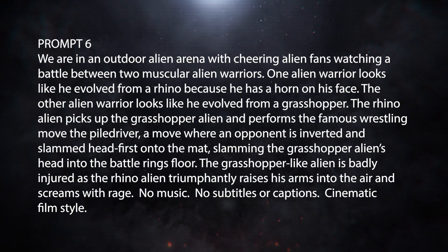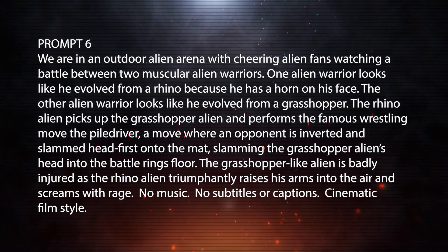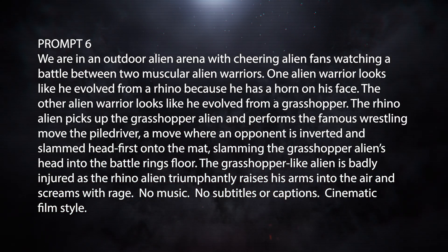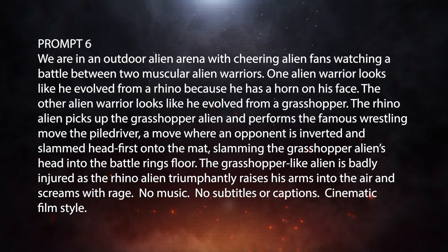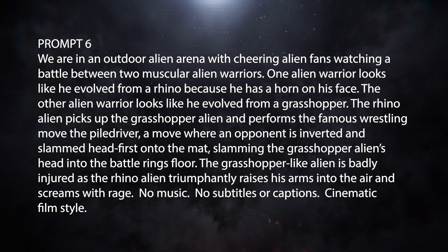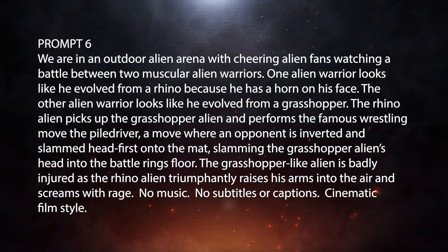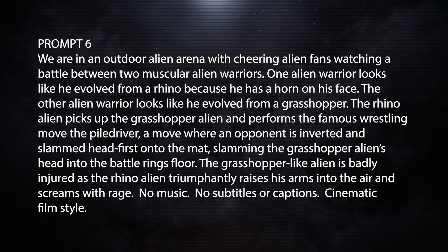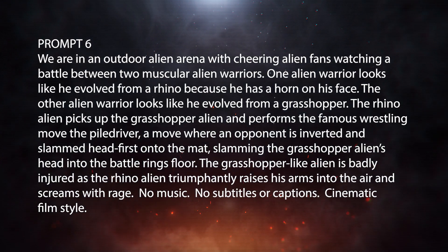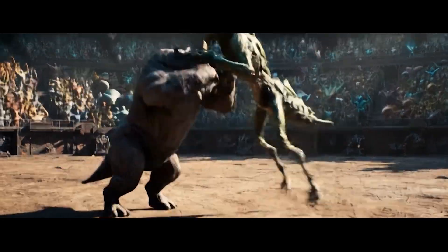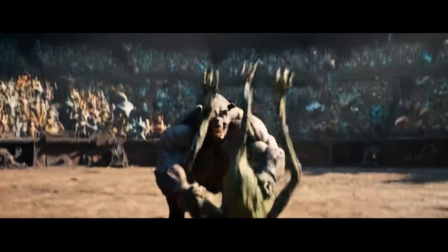Prompt 6: We're in an outdoor alien arena with cheering alien fans watching a battle between two muscular alien warriors. One alien warrior looks like he evolved from a rhino because he has a horn on his face. The other alien warrior looks like he evolved from a grasshopper. The rhino alien picks up the grasshopper alien and performs the famous wrestling move the pile driver — a move where an opponent is inverted and slammed head-first onto the mat — slamming the grasshopper alien's head into the battle ring's floor. The grasshopper alien is badly injured as the rhino alien triumphantly raises his arms and screams with rage. No music, no subtitles or captions. Cinematic film style. VO3 broke this shot into two angles — I didn't use the wide shot, but the part at the end where the victor screams is pretty cool.